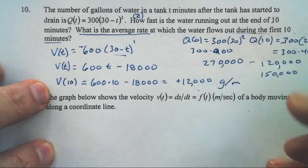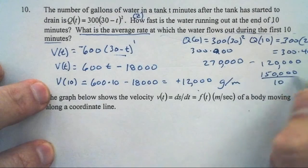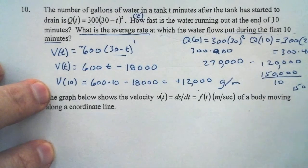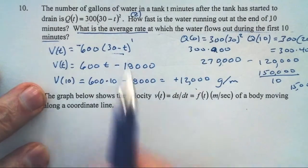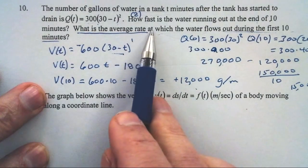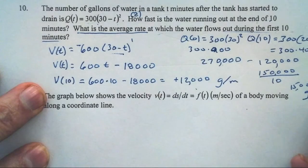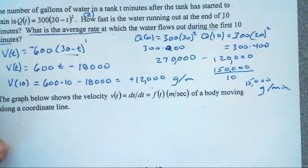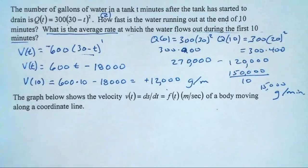The average over 10 minutes: 150,000 divided by 10 gives us 15,000 gallons per minute. That's the average rate.